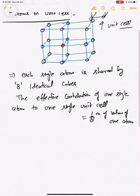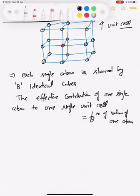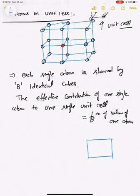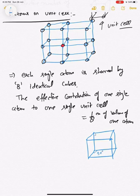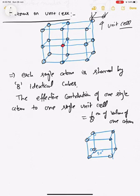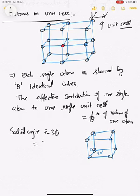There is another mathematical way of looking at this. In a cube every angle at the corner is 90 degrees. In three dimensions, the total solid angle is 4π. So the effective contribution can also be calculated mathematically.